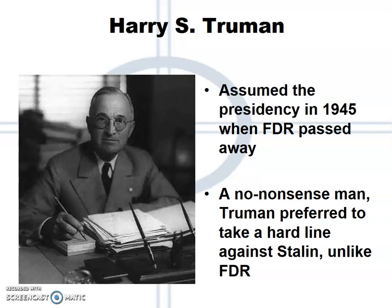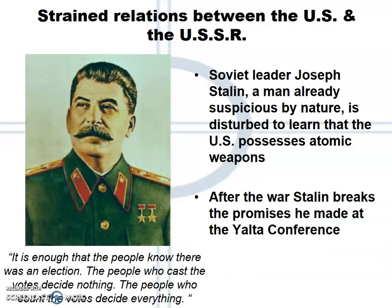While FDR liked to joke around and teased Stalin by calling him Uncle Joe, Truman was brusque — he did not mince words, he did not play nice. Two of his favorite sayings sum up his attitude: 'The buck stops here,' and 'If you can't stand the heat, get out of the kitchen.' Stalin, already a man who did not trust anyone, found this change in leadership in Washington, D.C., to further strain the relationship between these two countries.